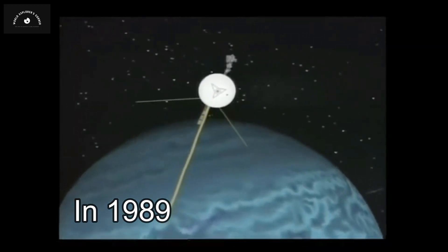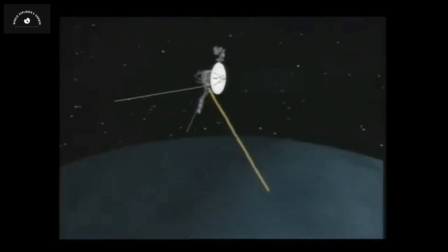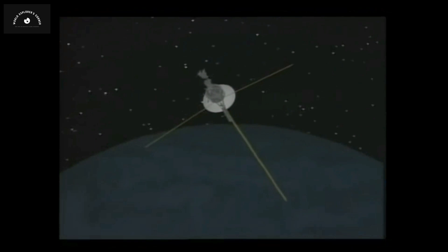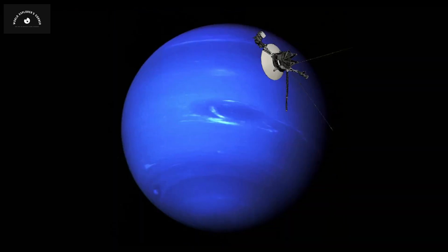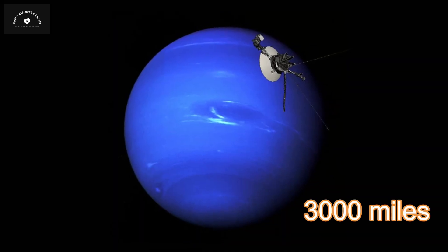In 1989, NASA's Voyager 2 spacecraft conducted a close flyby of Neptune, capturing detailed images from a distance of 3,000 miles.